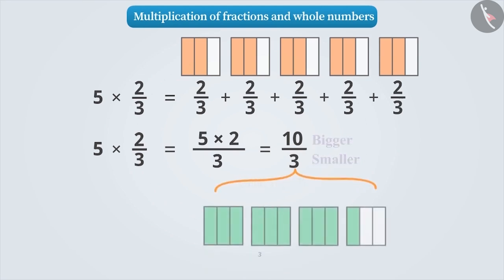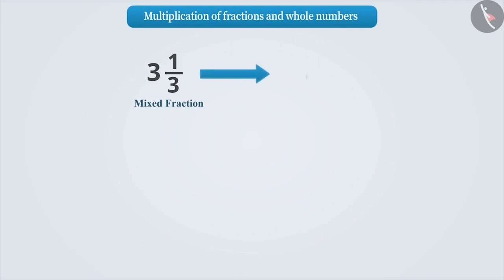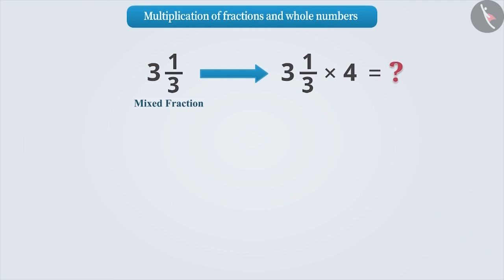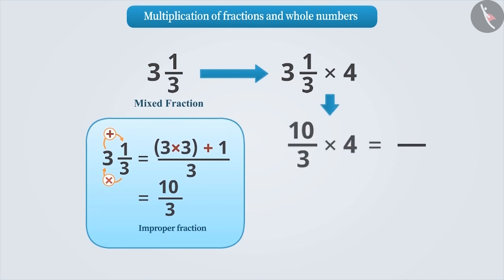In 10 by 3, 3 is a whole number and 1 third is part of a whole number. So, we can express 10 by 3 as 3 and 1 by 3. A fraction expressed as a combination of a whole number and a proper fraction is called a mixed fraction. If we have to multiply a mixed fraction by a whole number, we first convert the mixed fraction into an improper fraction, then multiply its numerator by the whole number, and keep the denominator the same.